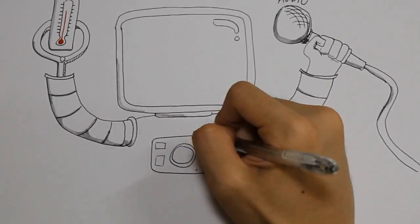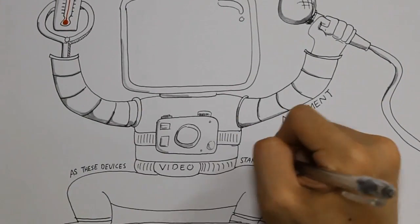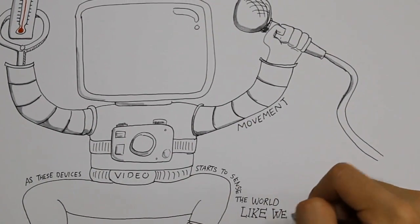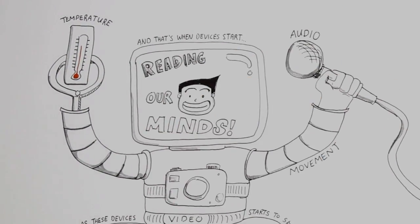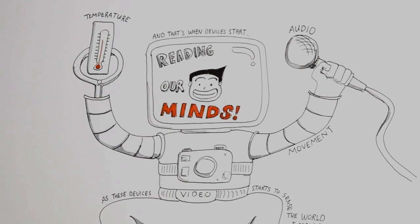But as electronic devices become more and more sensitive to different modalities like temperature, movement, audio, and video recognition, as these devices start to sense the world around us, much like we do, information will become much more personalized and relevant. And that's when devices start reading our minds.